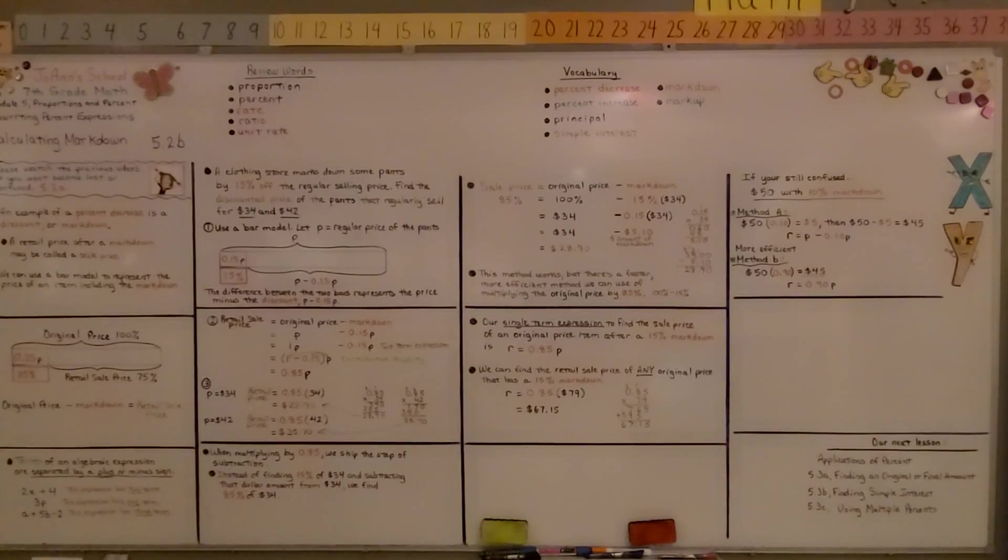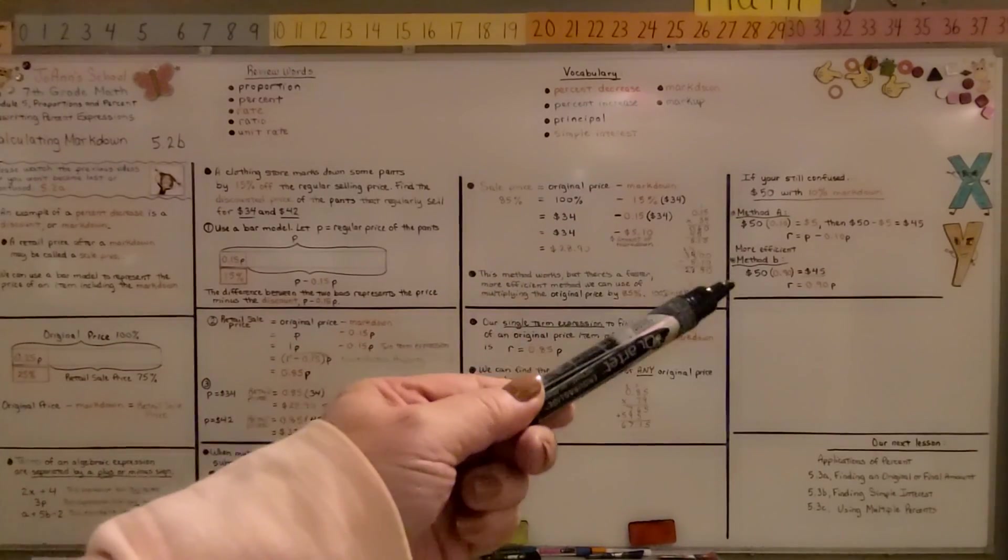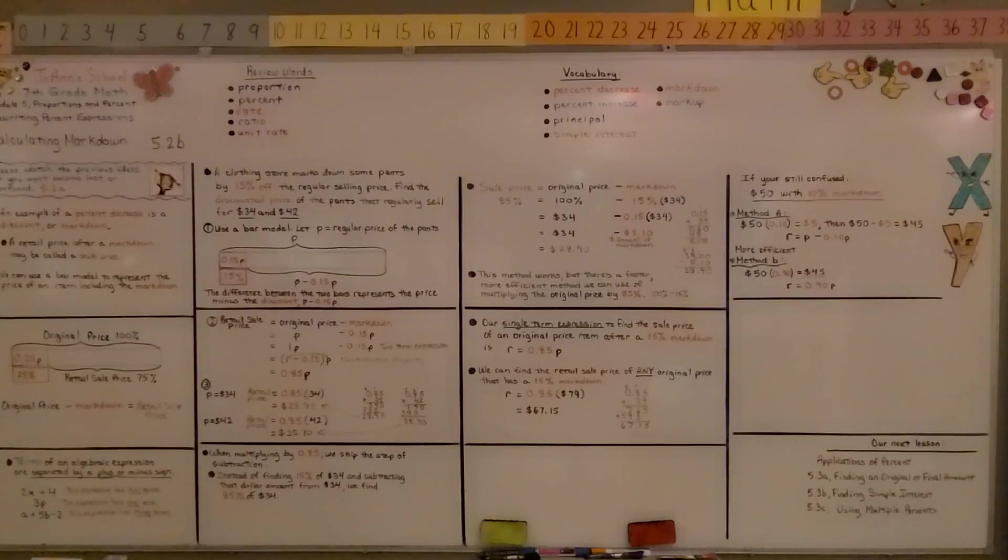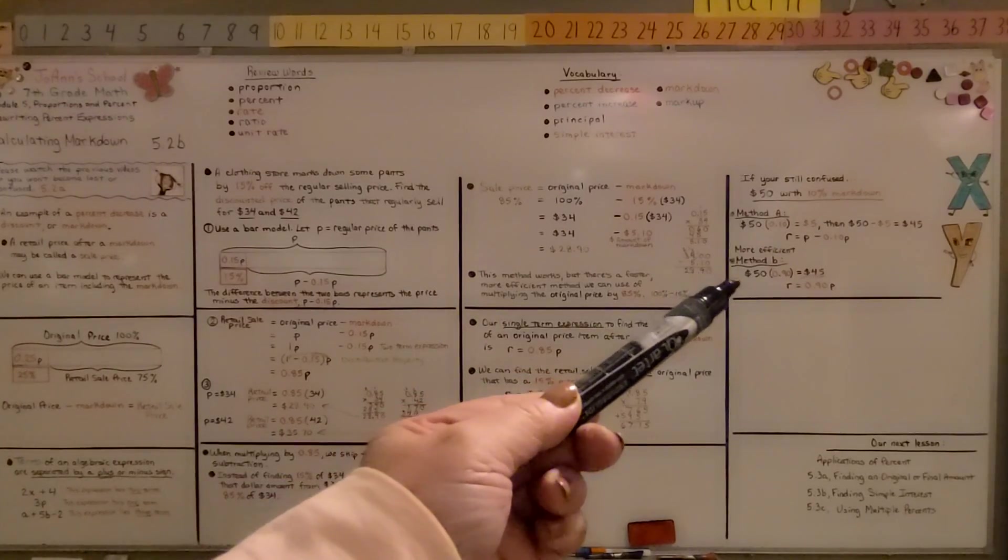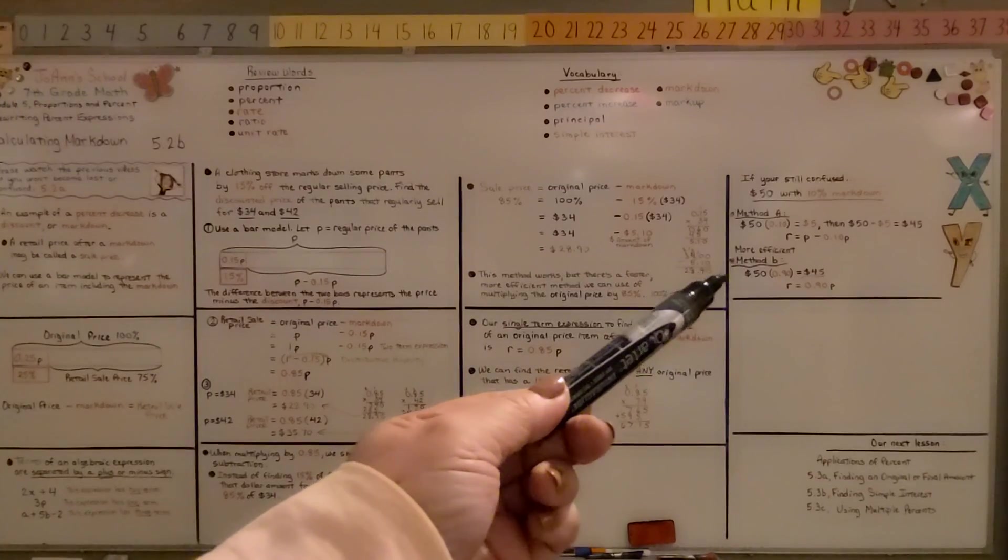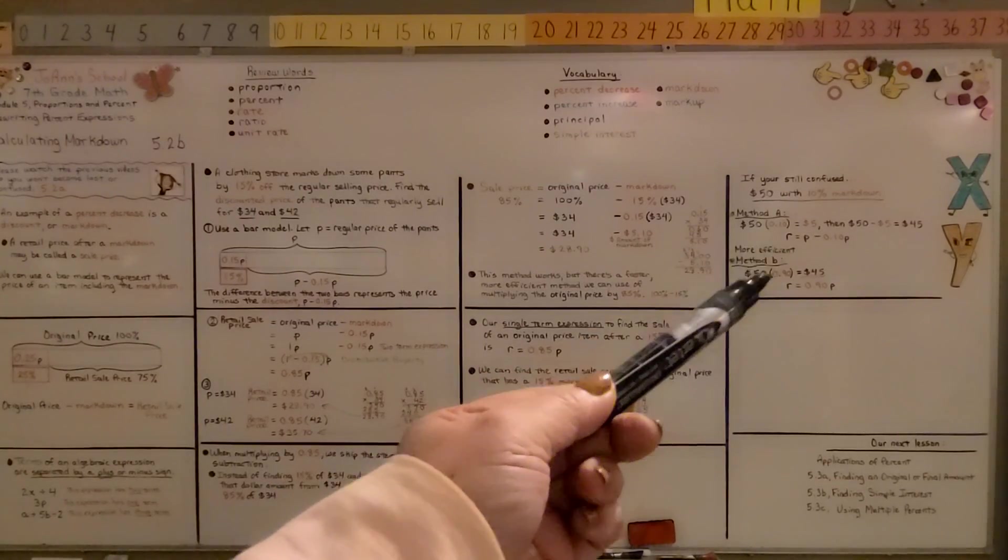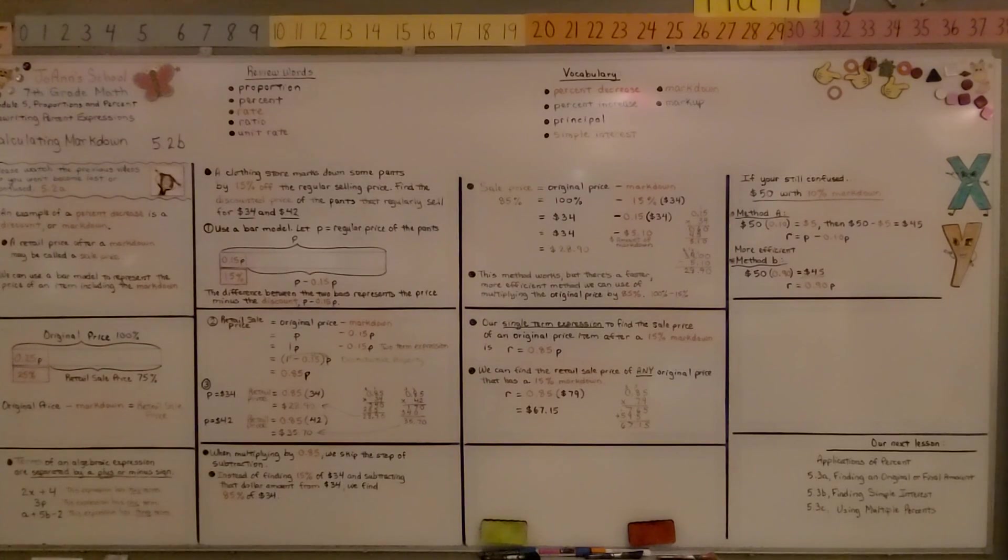So keep in mind, whether you use method A or method B, you're going to get the answer. But it's very important that you learn the more efficient way method B of just multiplying the original amount by the remaining percentage to get that retail sale price. Have a wonderful day.